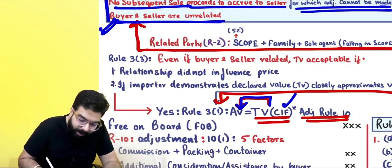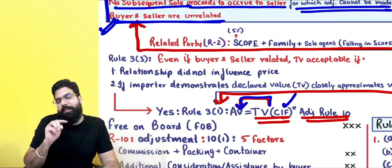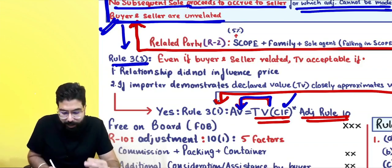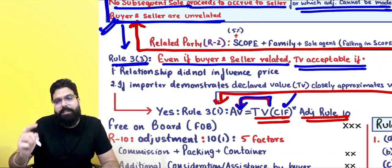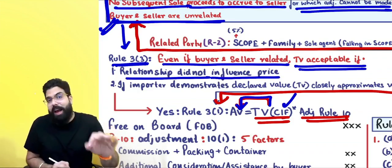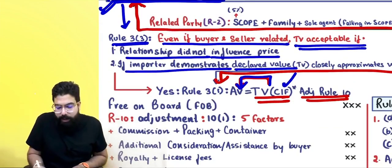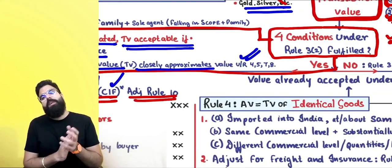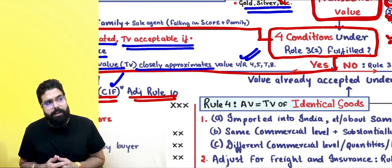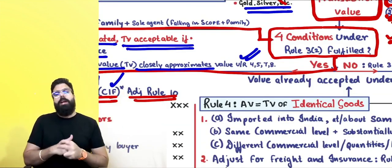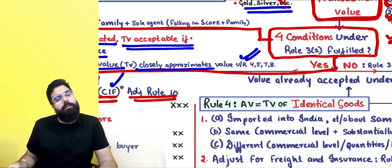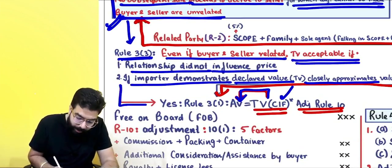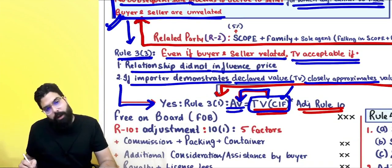Even if the buyer and seller are related, the transaction value will still be accepted as the assessable value if Rule 3 Sub-rule 3 conditions are satisfied. Rule 3(3) says: even if buyer and seller are related, transaction value is acceptable if the relationship did not influence the price, or you can demonstrate the declared value closely approximates the value determined under Rules 4, 5, 7, or 8. In other words, even by applying the valuation rules, the same value comes out.